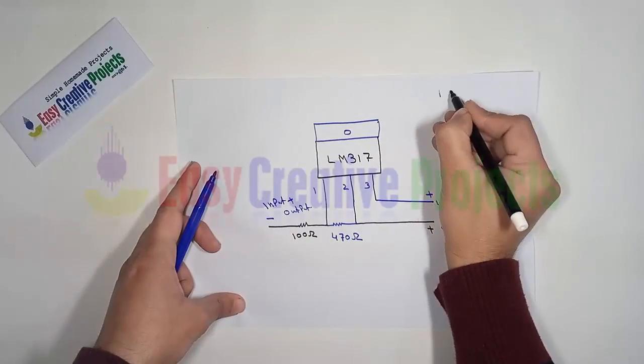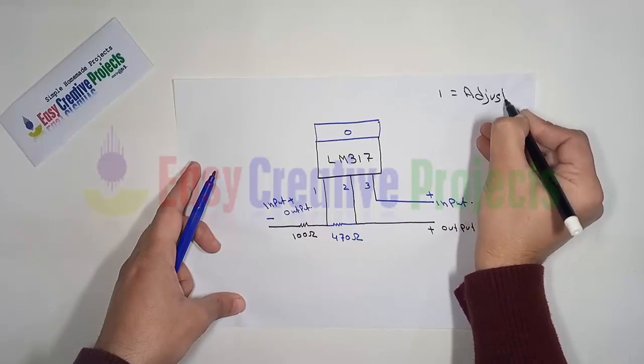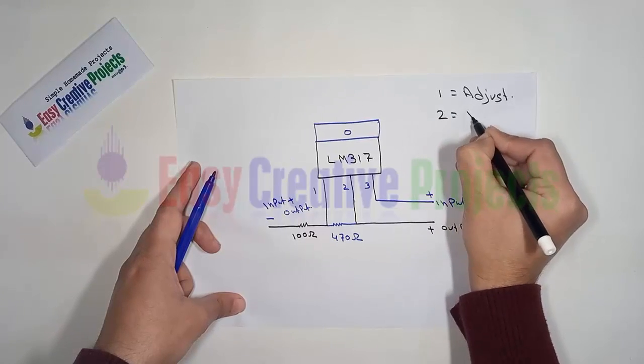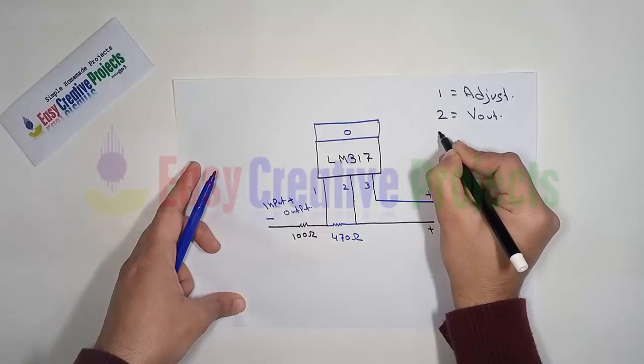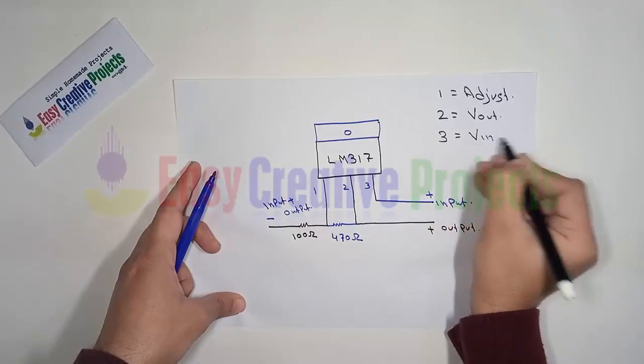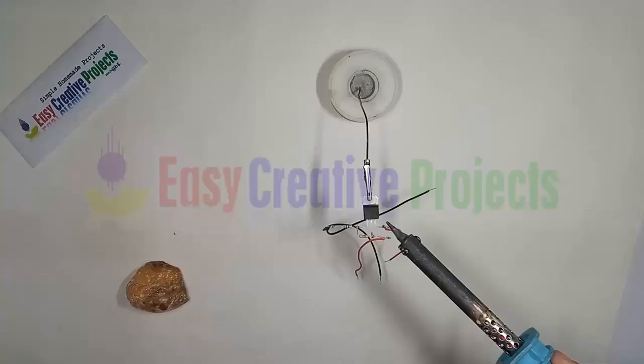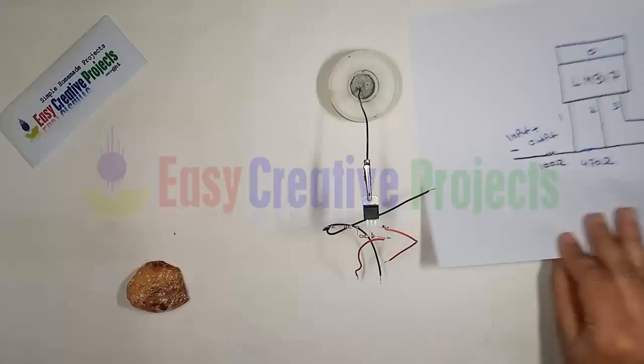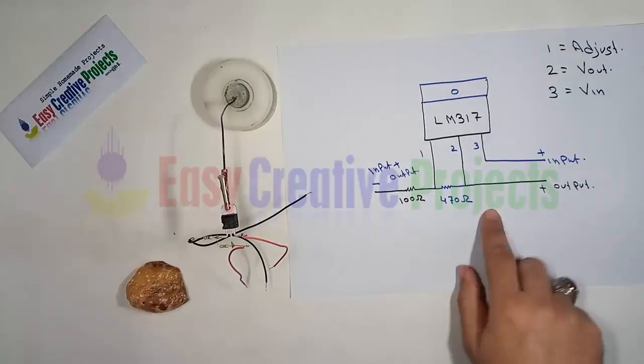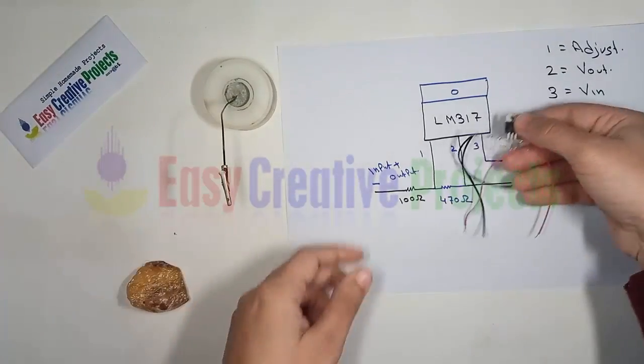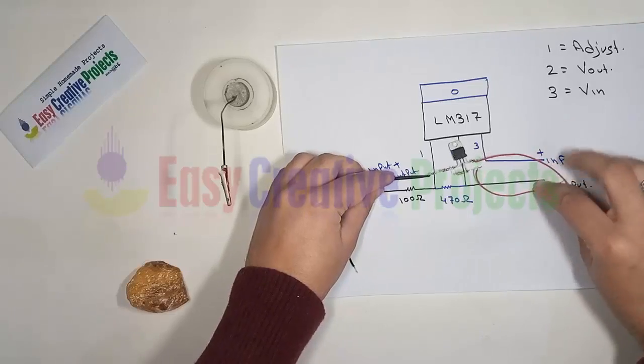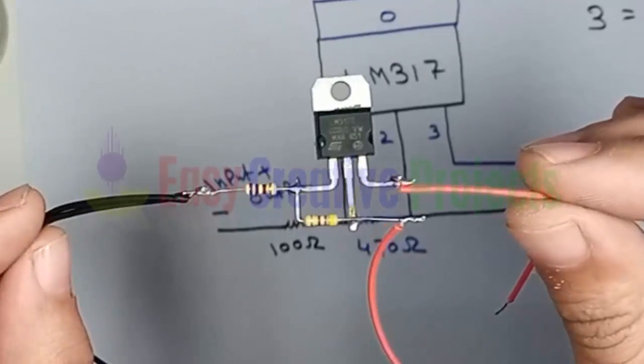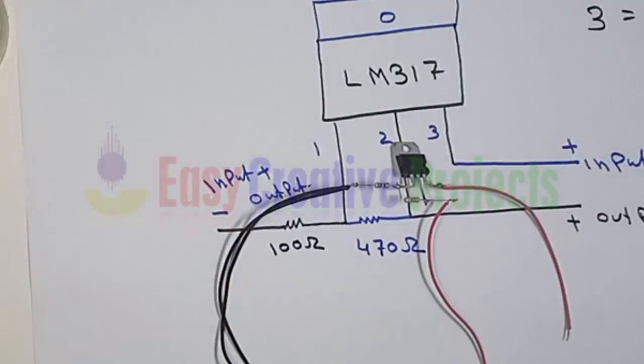The LM 317 has 3 pins: first is adjust, second is voltage out, and third is voltage in. Now connect all components using the circuit diagram. The project is ready for test.